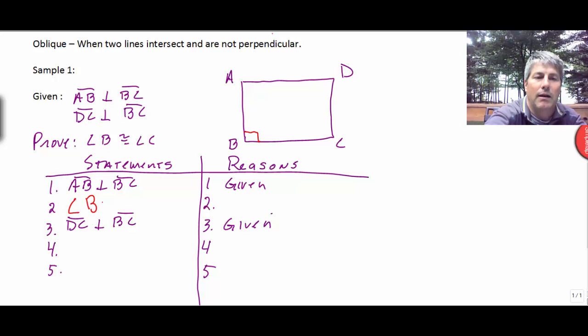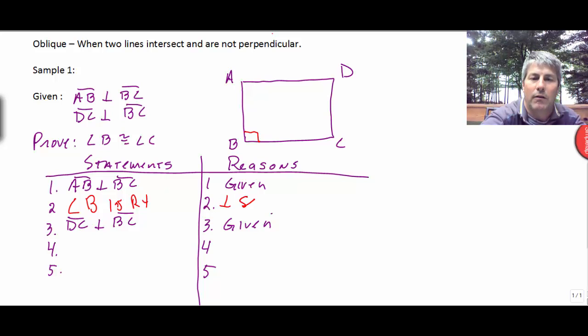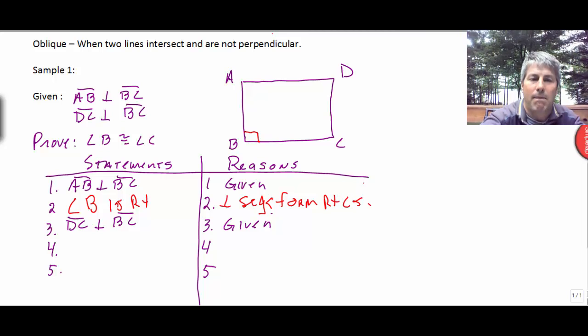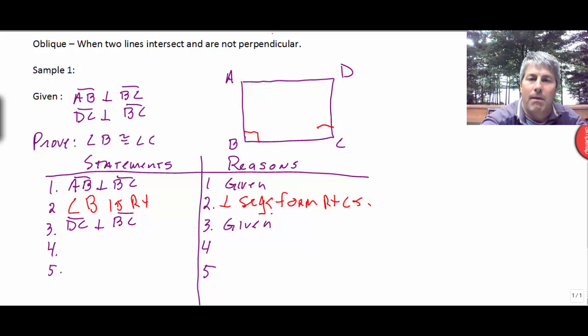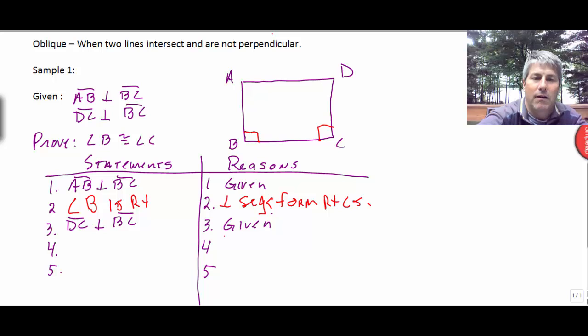So I'll start: angle B is right. And I'll use my new reason, perpendicular segments form right angles. And again, same thing with BC is perpendicular to DC. I have a right angle and same as two.